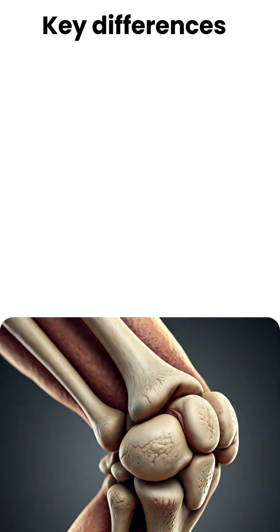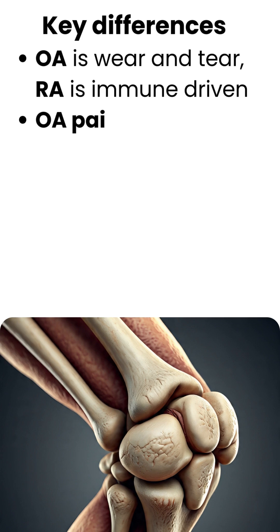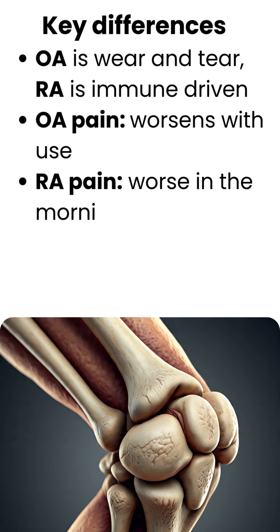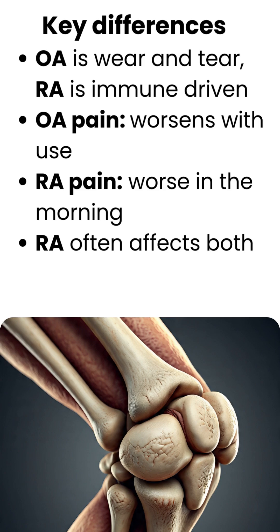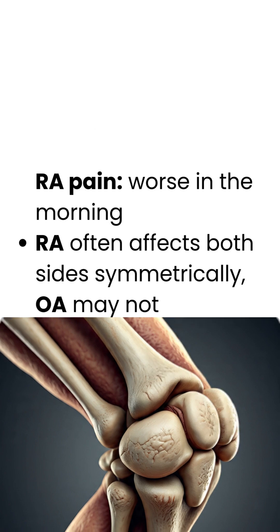Key differences: OA is wear and tear, RA is immune-driven. OA pain worsens with use, while RA pain is worse in the morning. RA often affects both sides symmetrically, whereas OA may not.